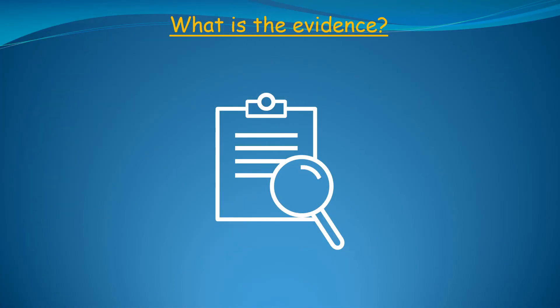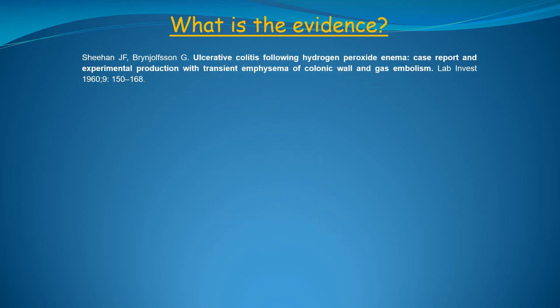Before we get to the reason why hydrogen peroxide is high in the colon of individuals with ulcerative colitis, we first need to know if hydrogen peroxide can really cause ulcerative colitis. To figure this out, we can look at a few seminal studies with the benefit of 21st century hindsight. In 1960, a case report of human ulcerative colitis caused by a hydrogen peroxide enema was followed up by a study in which mice receiving hydrogen peroxide enemas developed colitis that was histologically indistinguishable from human ulcerative colitis.